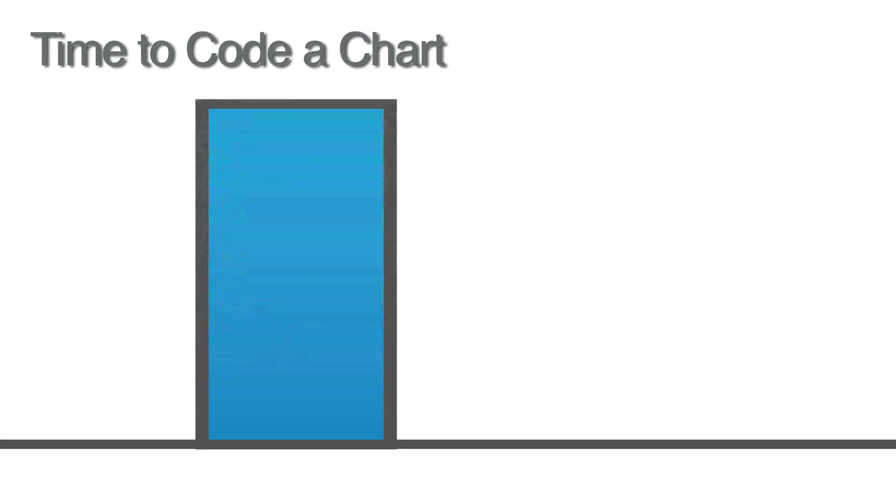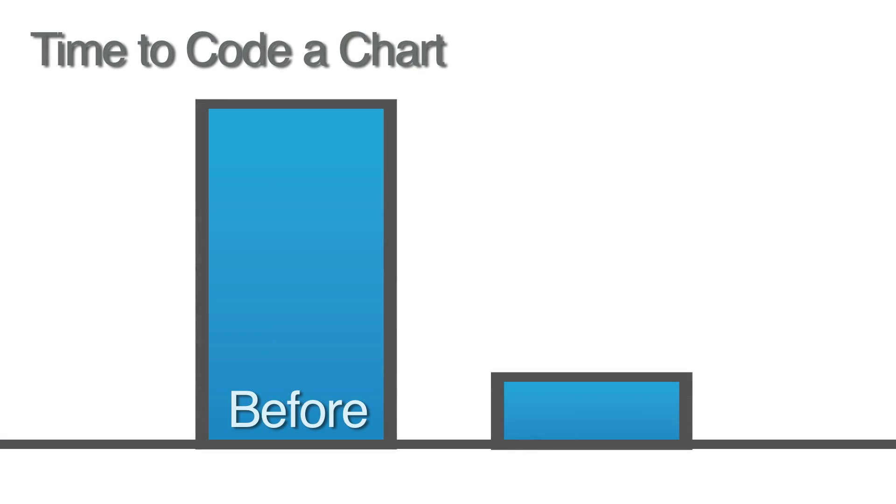Fusion CAC offers many benefits to help with these existing challenges. Fusion CAC has been proven to increase coder productivity, and it has been documented to reduce time to code a chart by up to 80%. CAC has also been known to dramatically reduce or eliminate outsourced coding expenses. A decrease in coding errors and variability, along with shortened billing cycles and decreased denials, can be experienced.